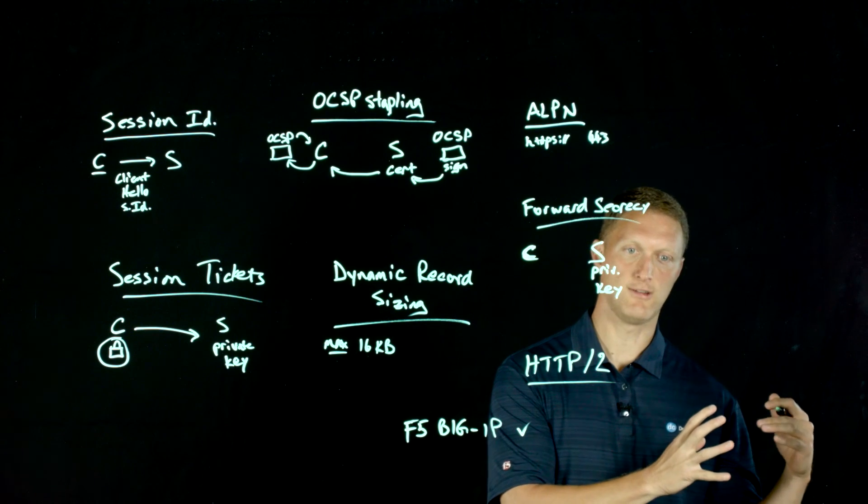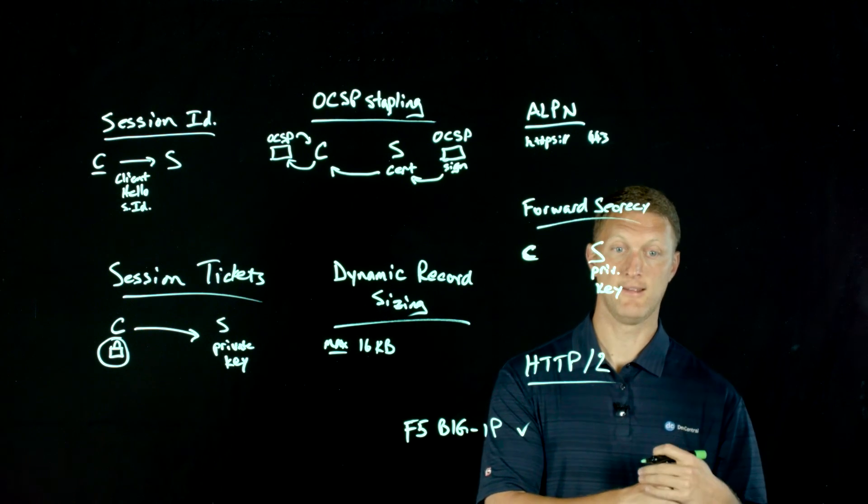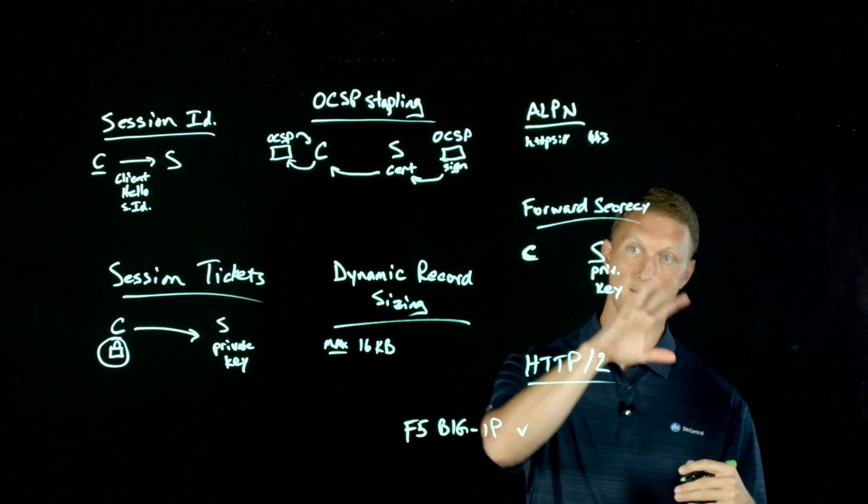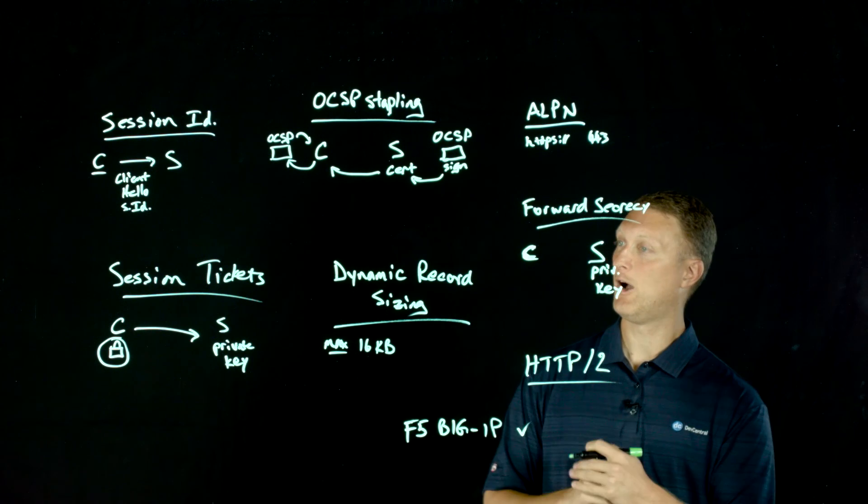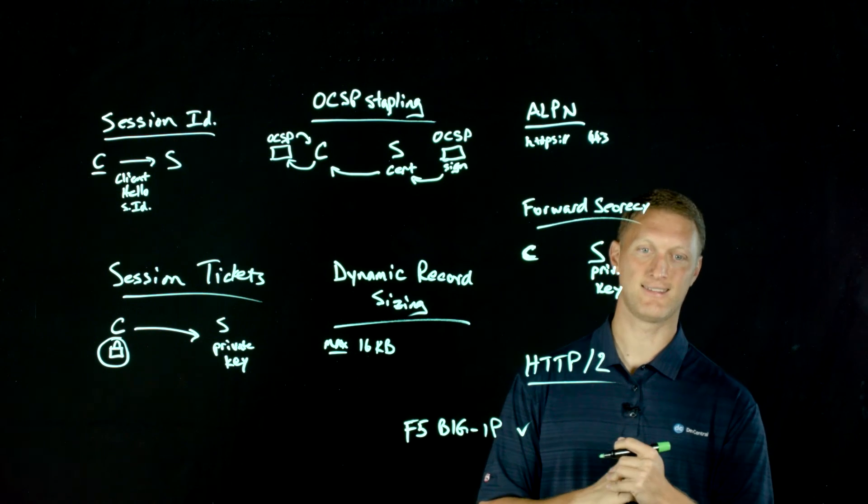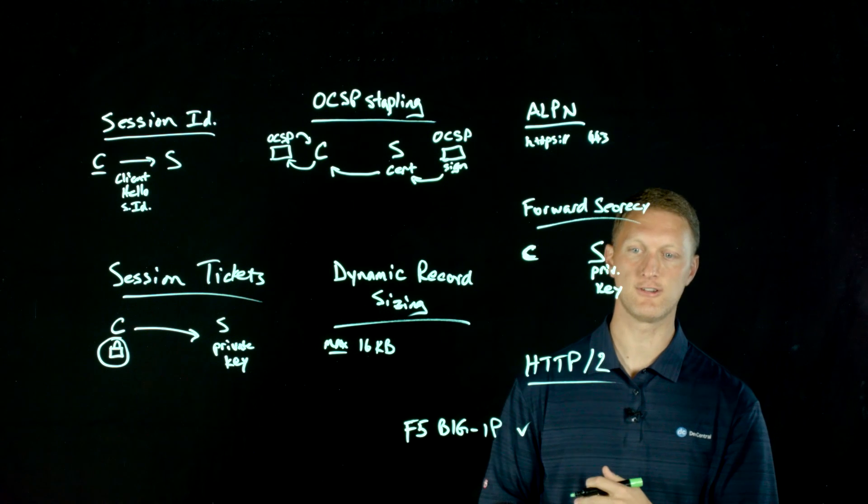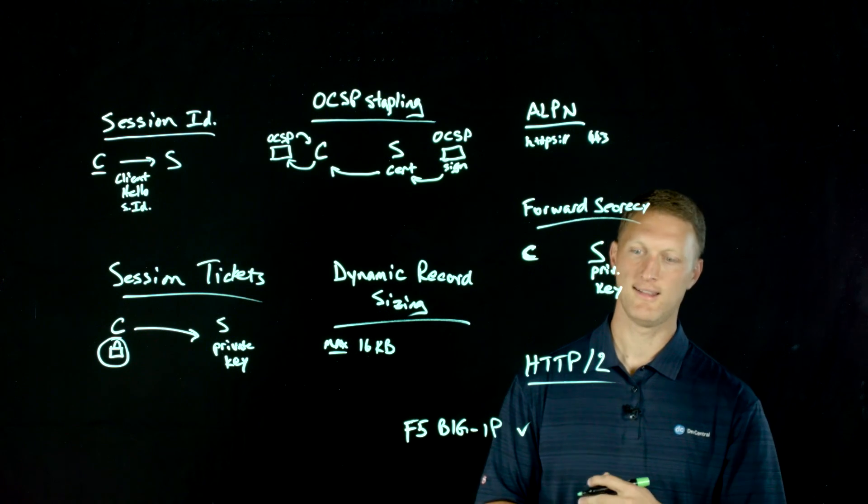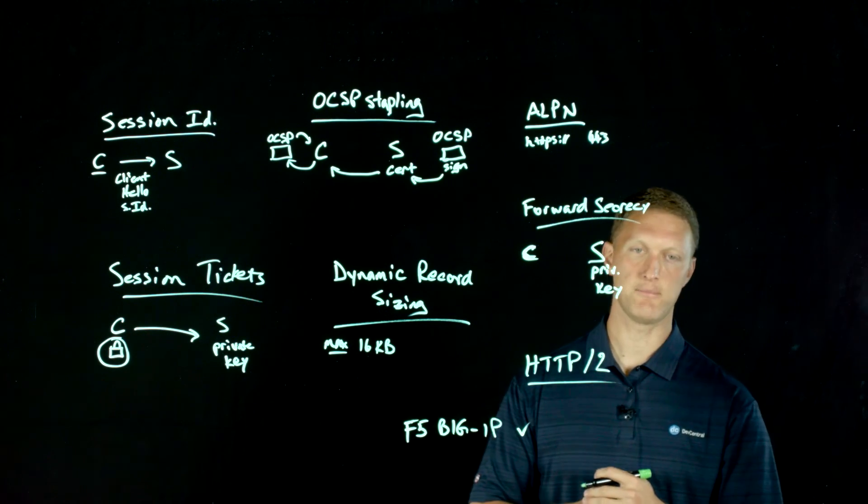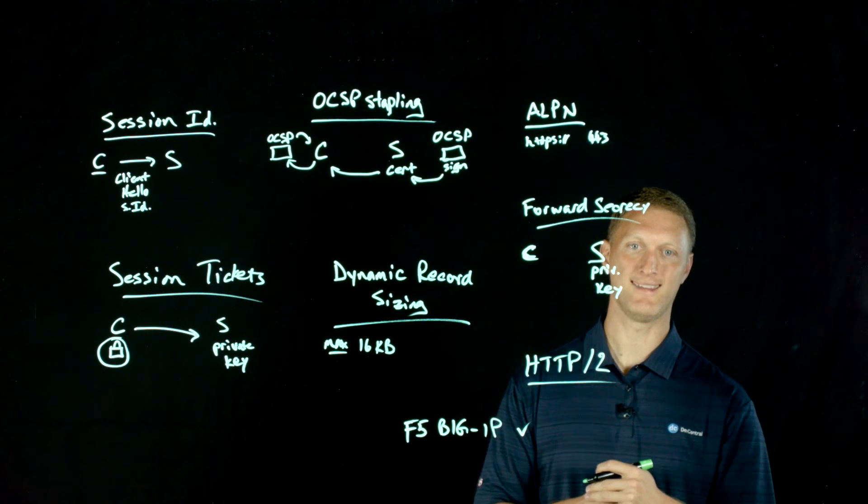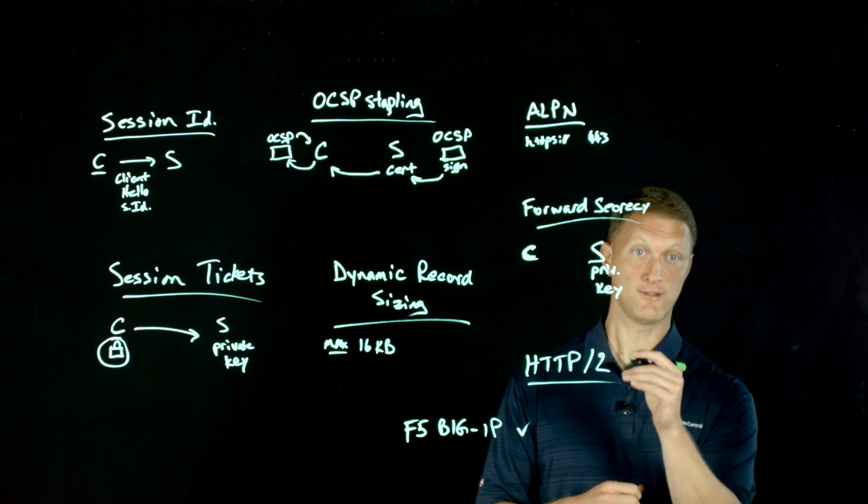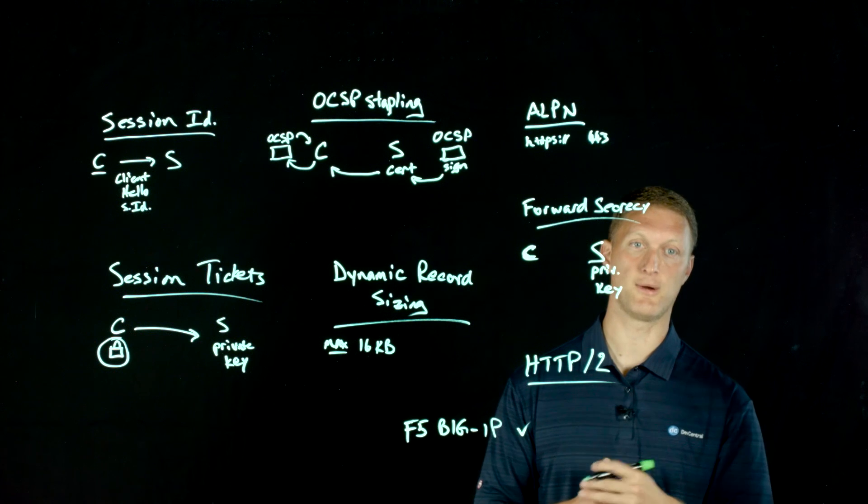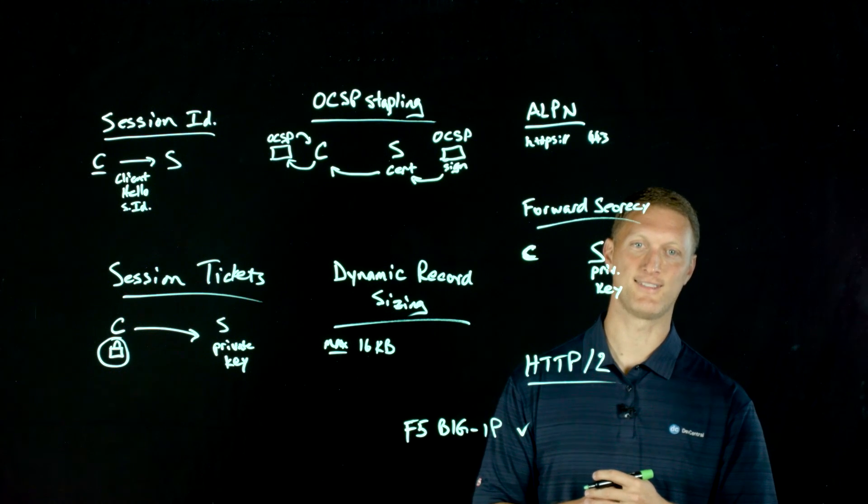So even if you have a web application or a web server on the backend, you can front that with a big IP and still accomplish all this stuff. So hope you've learned a couple of things today about TLS and how to make it faster, how to make it more efficient. So get out there, use your F5 big IP to make TLS not only secure but also fast. So thanks for watching today and we'll see you guys out there in the community.